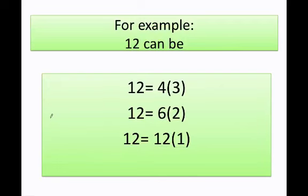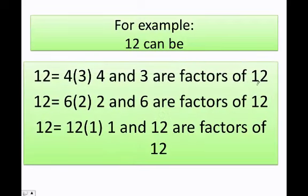As you can see here, 4 and 3 are factors of 12, 2 and 6 are factors of 12, 1 and 2 are factors of 12. So basically when you multiply two integers, the integers that you're multiplying are called factors.